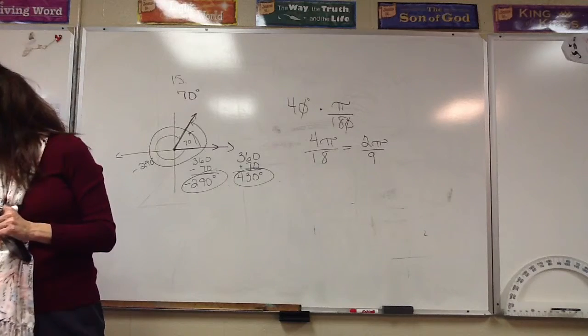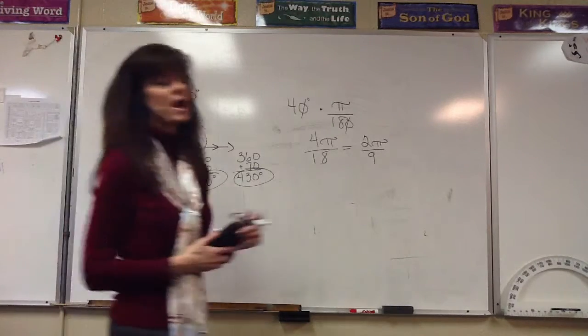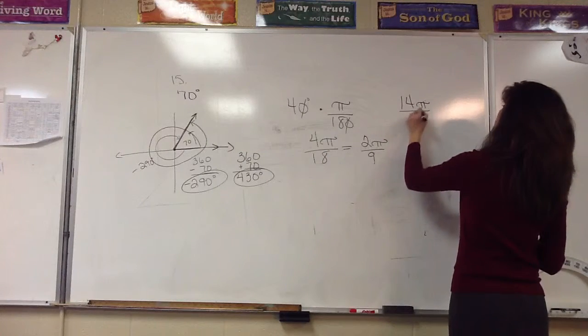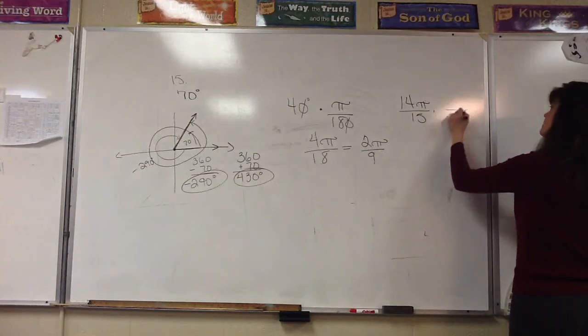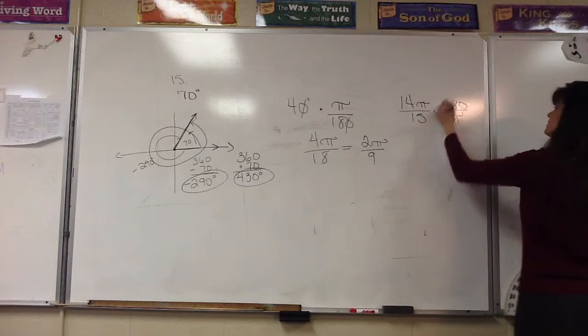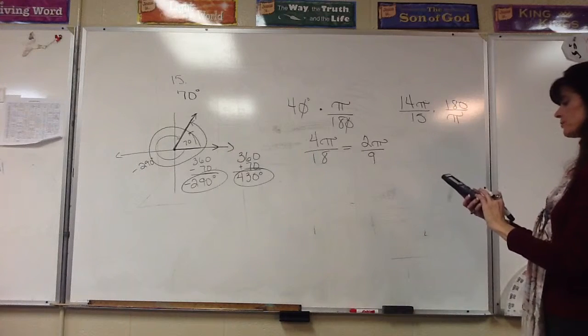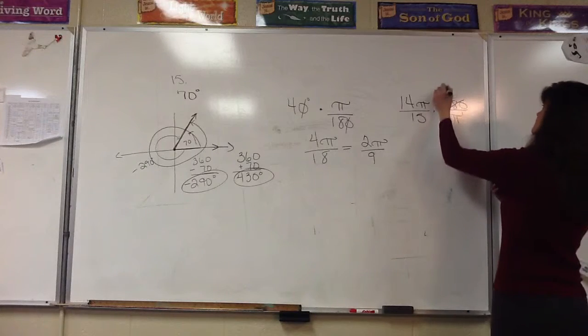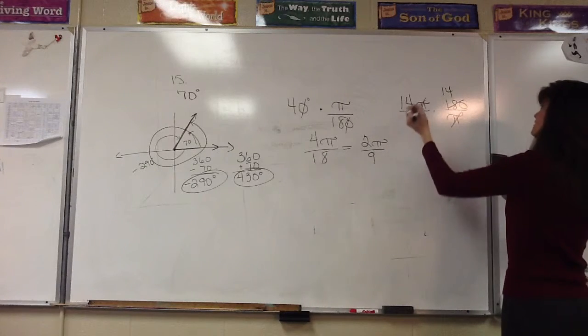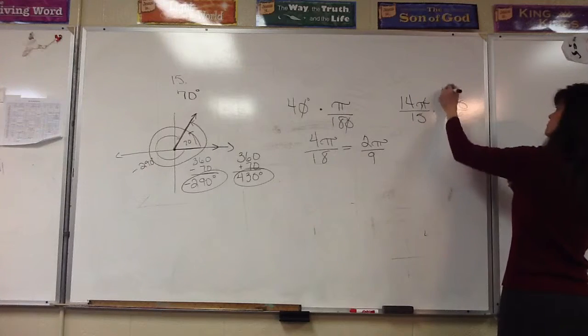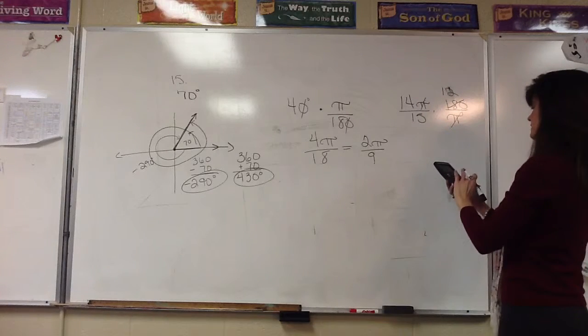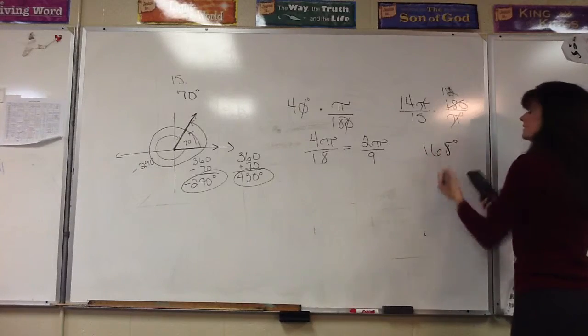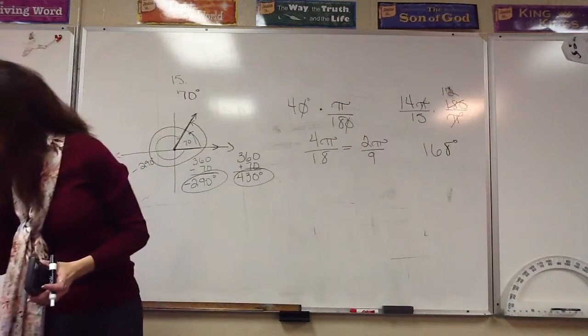And then, let's take a look at number 13. I have 14 pi over 15, and we want to convert that to degrees. So this time, the pi radians will go in the denominator. I'm going to see if 15 will go into 180, and it will 12 times. We want that to cancel out. So now, we're going to say 14 times 12 equals 168 degrees, and that would be my answer for that one.